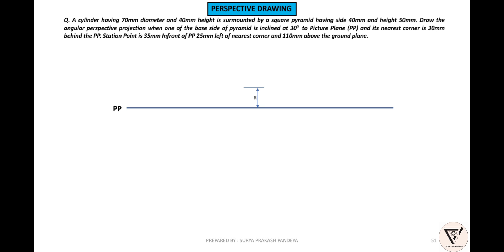The point is clear. The base of the pyramid is 30 degrees inclined to the picture plane — the horizontal line is 30 degrees inclined. This line is 30 degrees inclined. Square base pyramid top view: this line is 30 degrees inclined, 40mm. This line is perpendicular, this line is 40mm. Square complete.